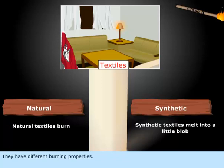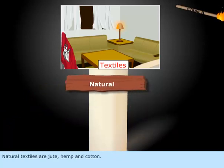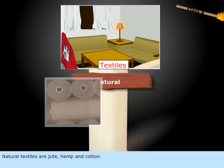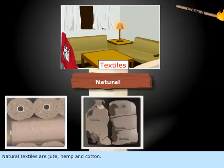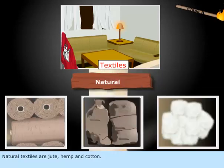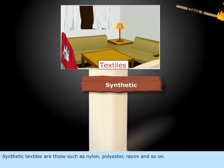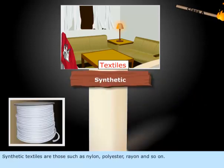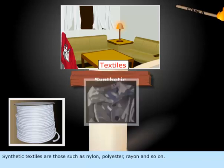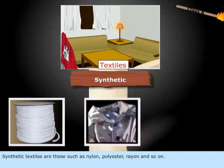They have different burning properties. Natural textiles are jute, hemp, and cotton. Synthetic textiles are those such as nylon, polyester, rayon, and so on.